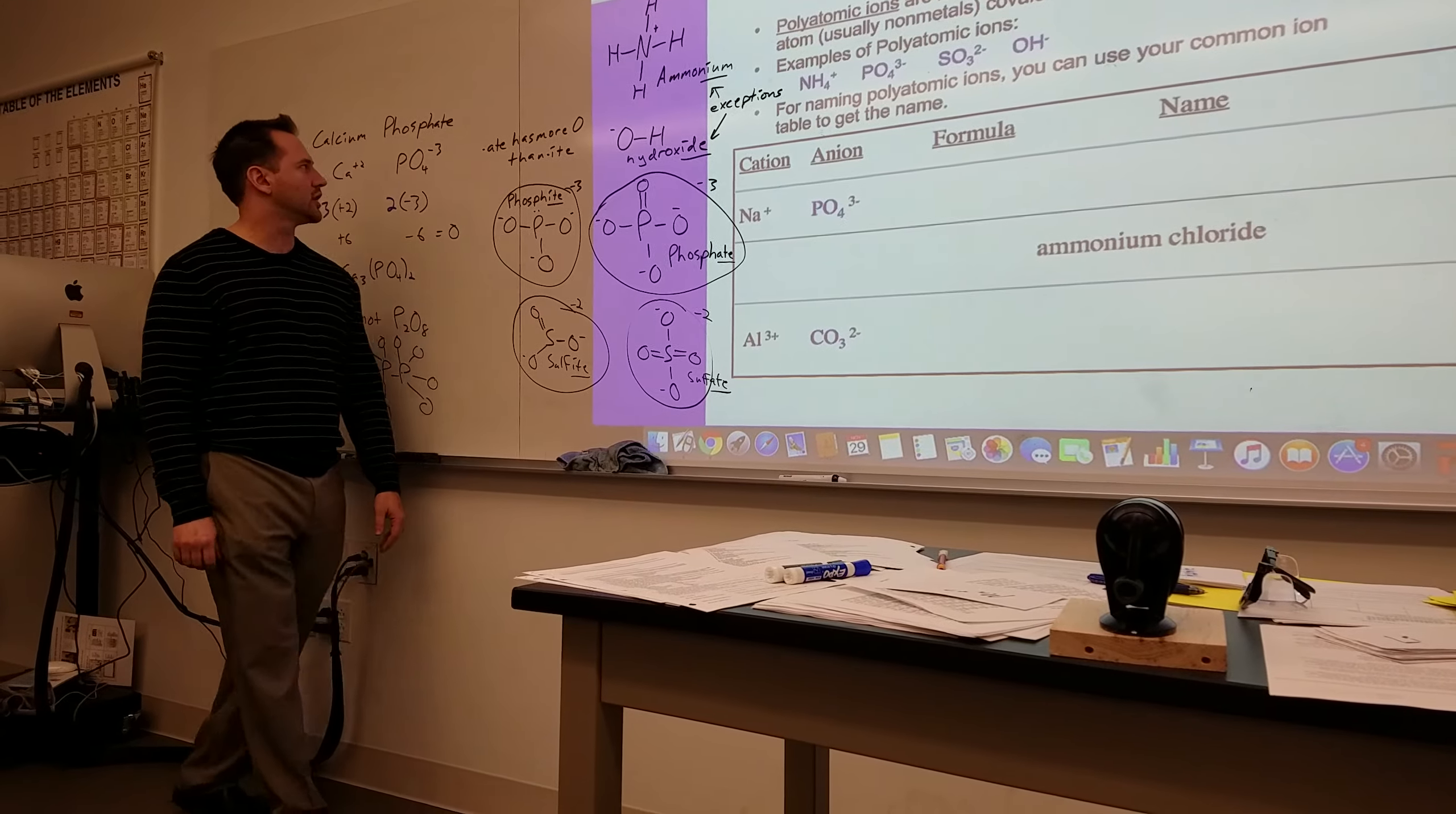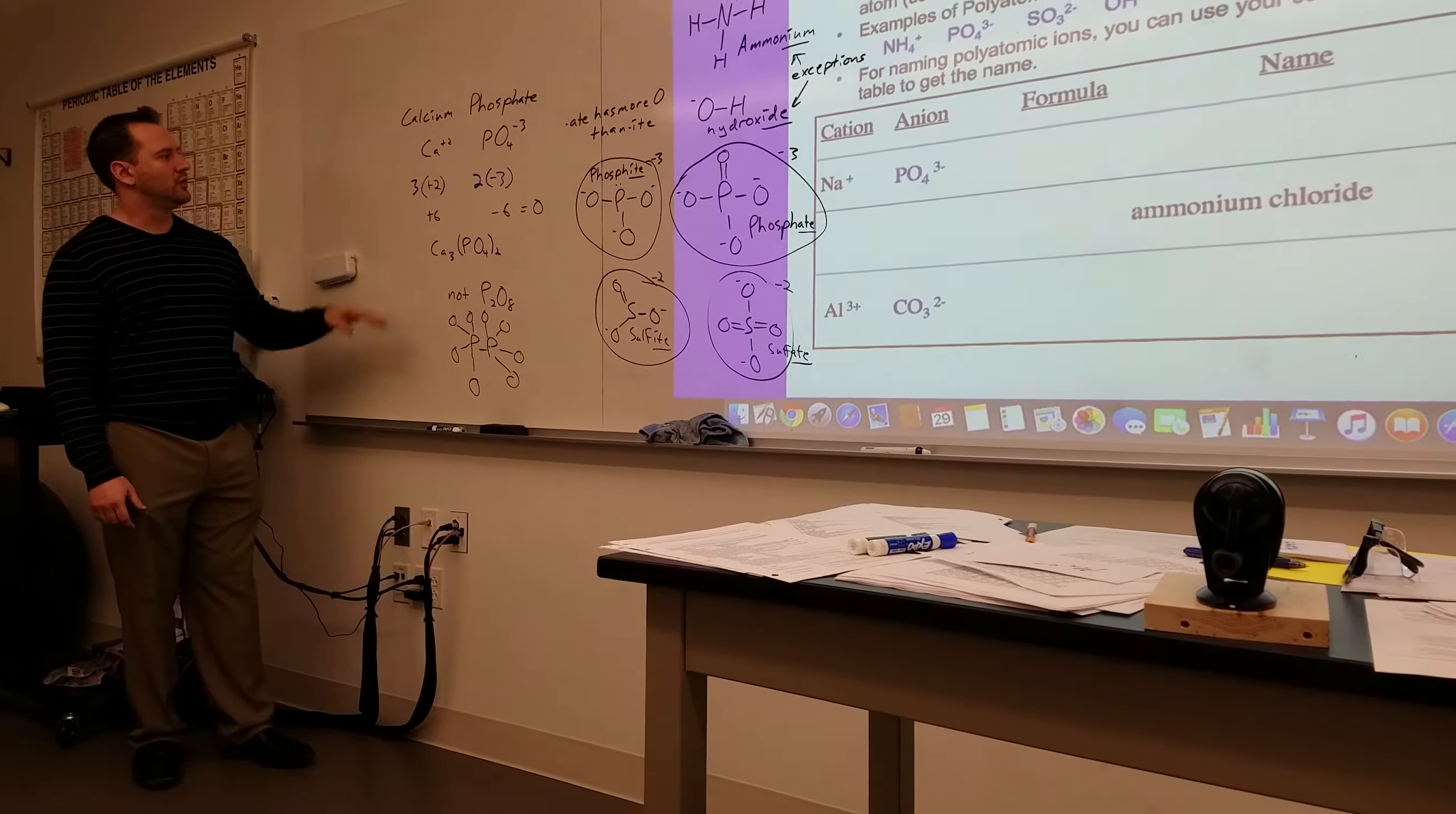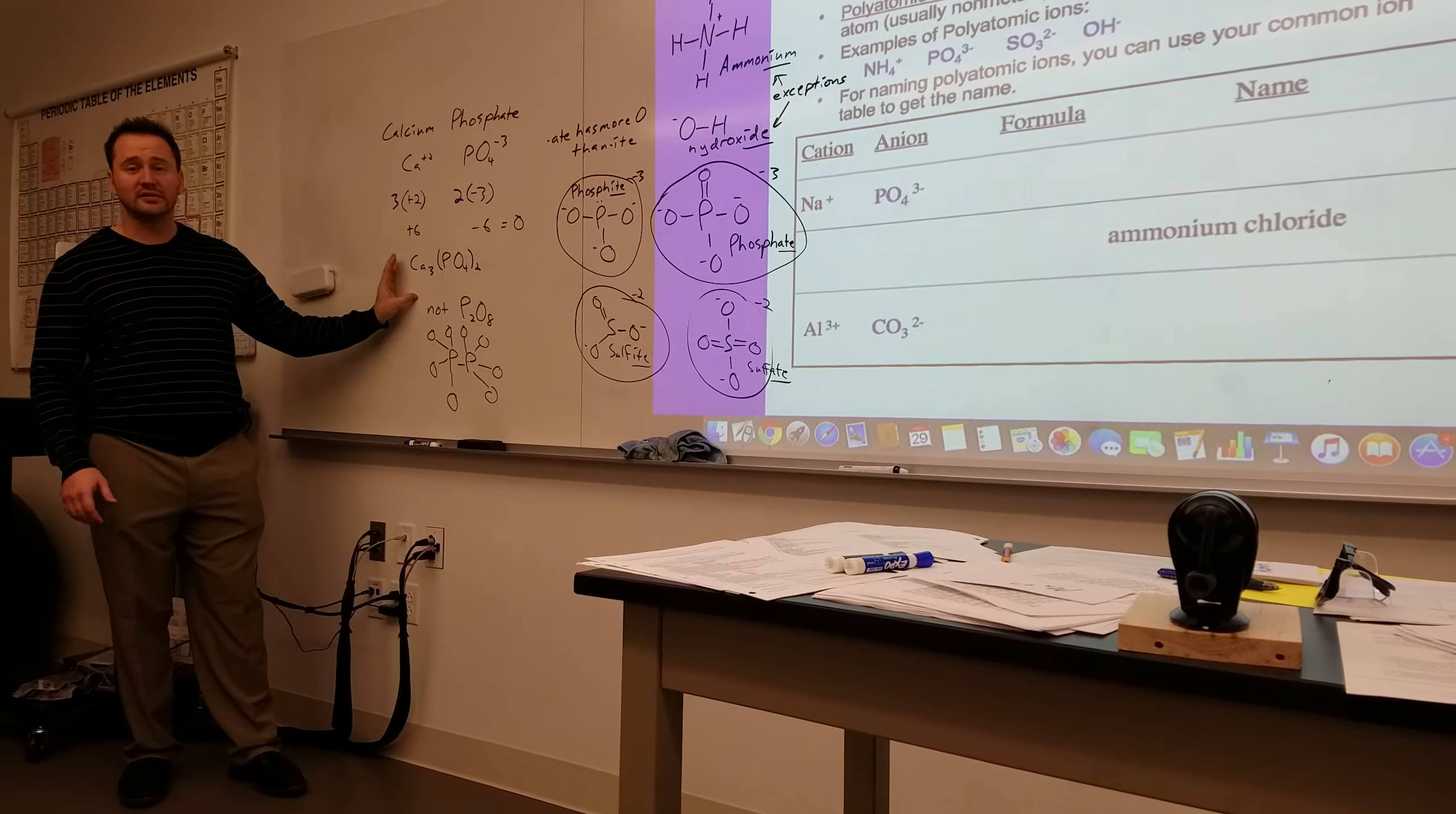Overall, it has a negative two charge. But how we handle them when we're writing formulas is very straightforward, and going back to the name is even easier. This would be calcium phosphate. If I gave you this name, I would expect you to be able to predict the formula, and here's how you would do it.